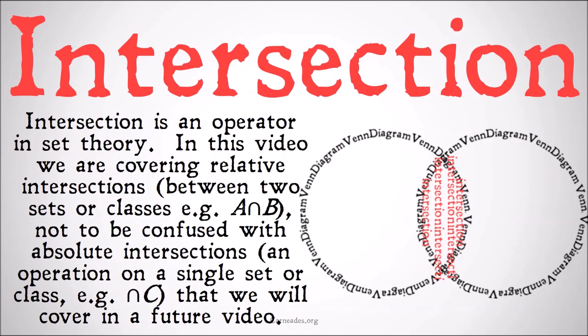Intersection is an operator in set theory. In this video we are covering relative intersections between two sets or classes, for example A intersection B. Not to be confused with absolute intersections, an intersection on a single set or class, for example the intersection of C. We will cover that in a future video.